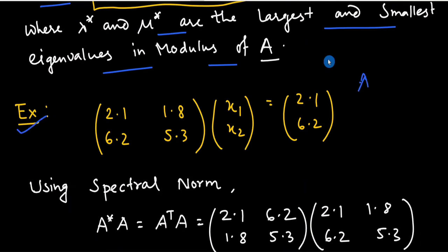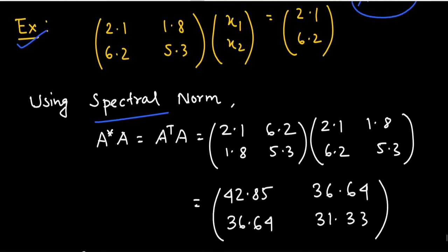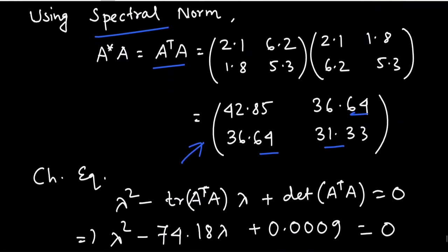Let us take an example. Given a system Ax = b, we have to find the norm of A with respect to the spectral norm. Since A is a real symmetric matrix, we find A transpose A. This equals the matrix: [42.85, 36.64; 36.64, 31.33]. We note that this matrix is real and symmetric.